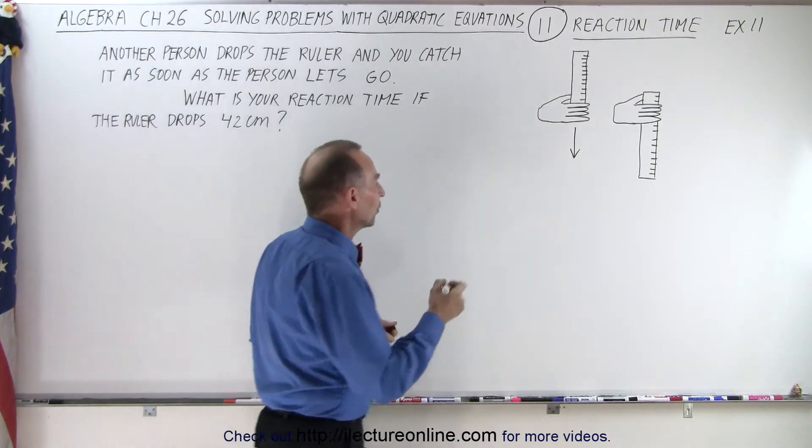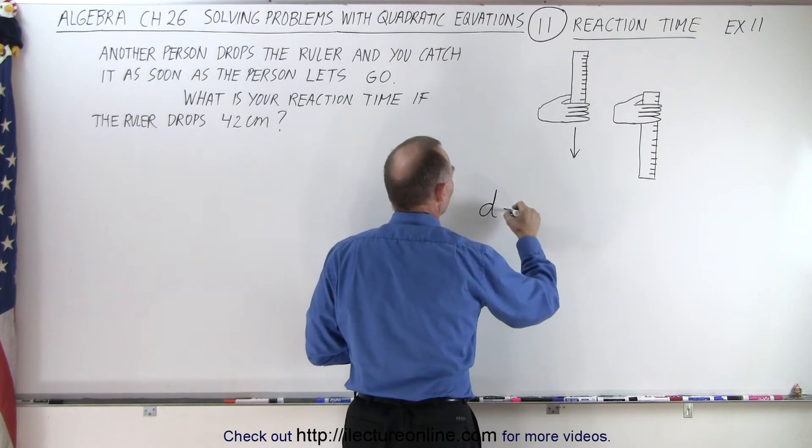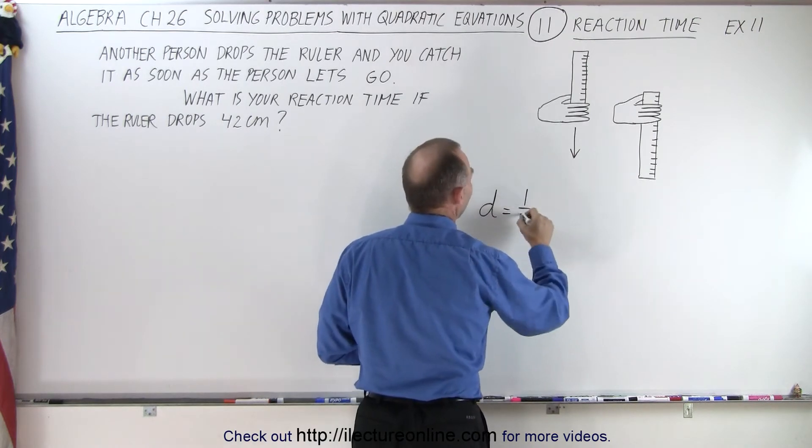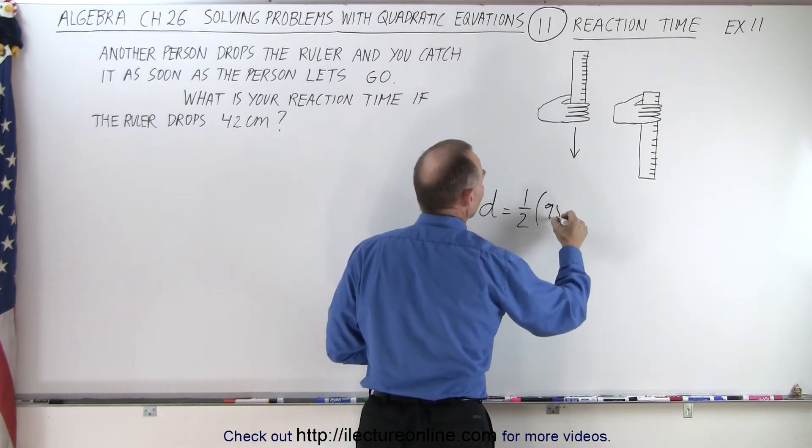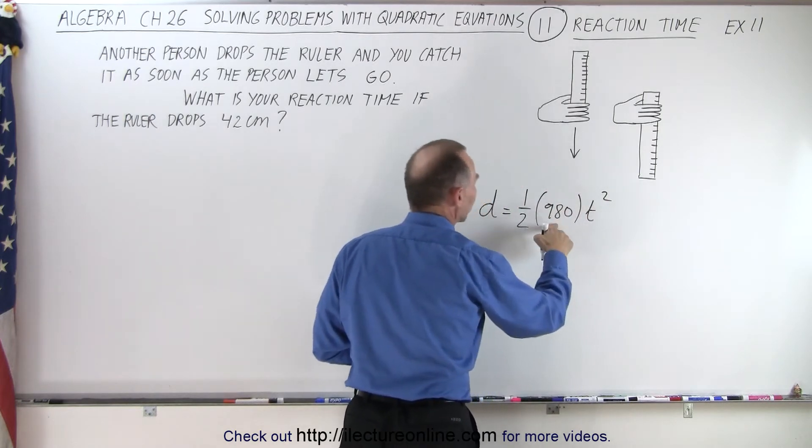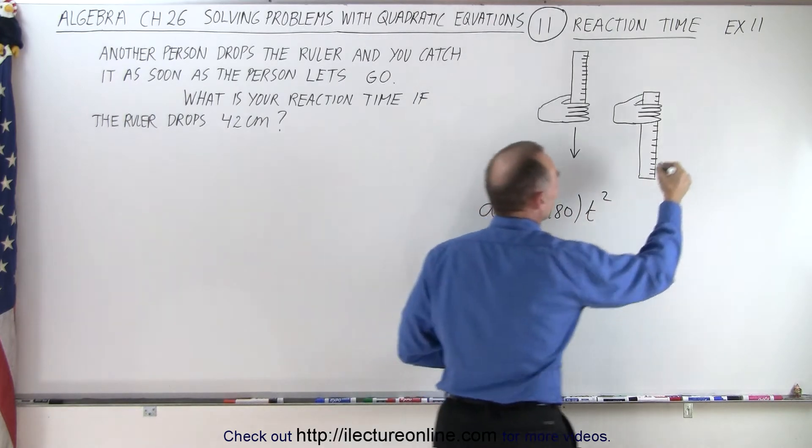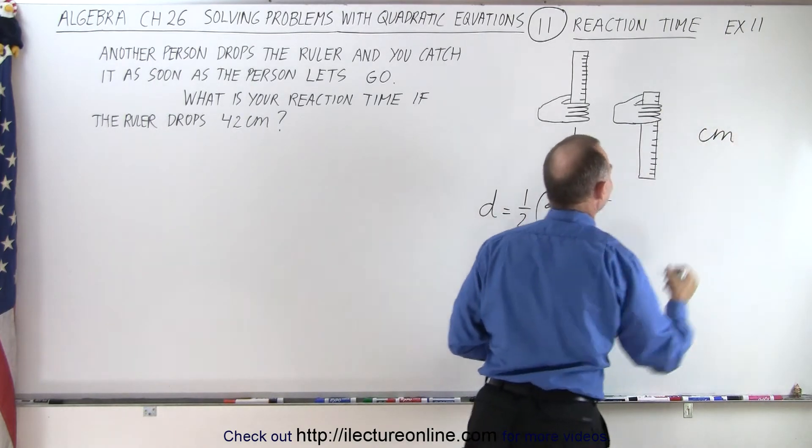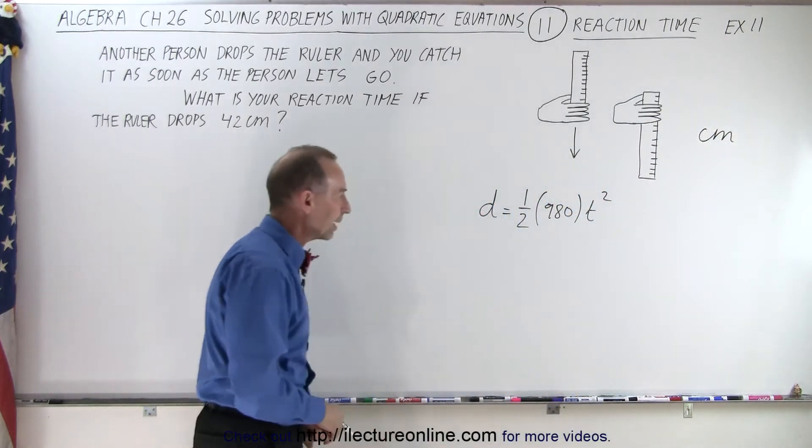And so the equation is as follows. The distance is equal to 1/2 times 980 times the time squared, where 980 is in terms of centimeters. So we're going to measure a ruler in centimeters.